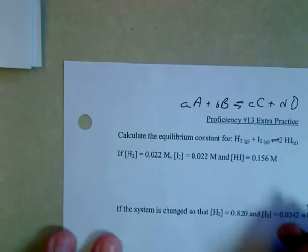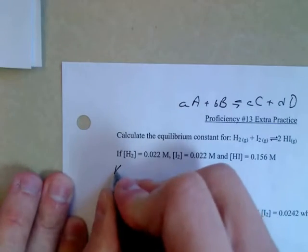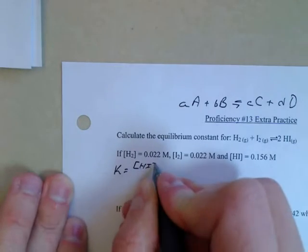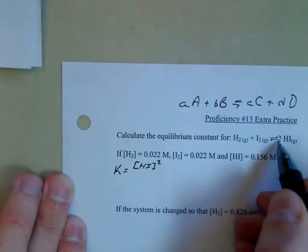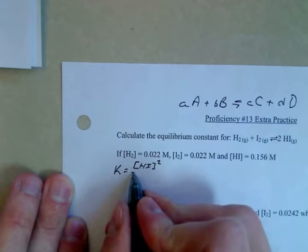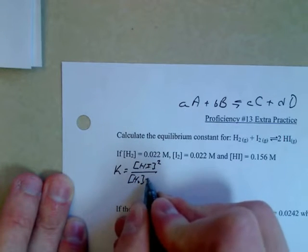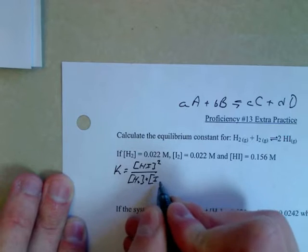So in this instance, you're going to have K equals the concentration of HI squared, because there's two of them, divided by the concentration of H2 times the concentration of I2.